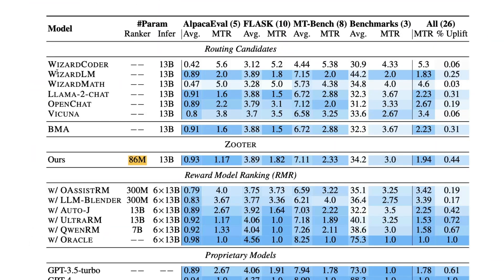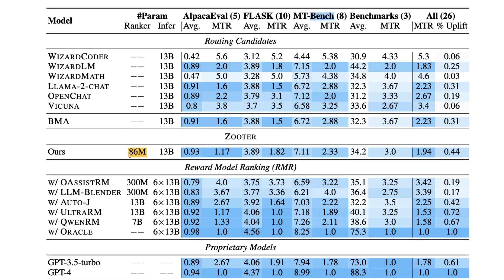This setup uses a bunch of LLMs: WizardCoder, WizardLM, WizardMath, LLaMA 2 Chat, OpenChat, and Vicuna. These models are benchmarked across AlpacaEval, FLASK, and MT-Bench. For example, on AlpacaEval, LLaMA 2 Chat has the best average; on FLASK, 3.88 is the best average again for LLaMA 2 Chat. The ZOOTER model — an 86 million parameter DeBERTa ranker — combined with the same 13 billion parameter models consistently does better than all the other models on average.